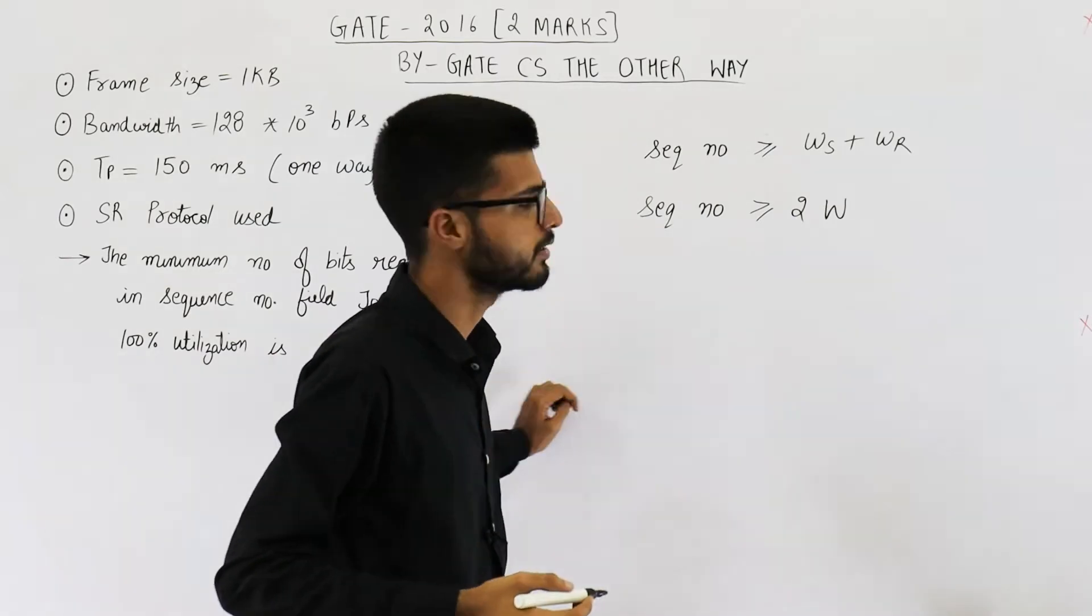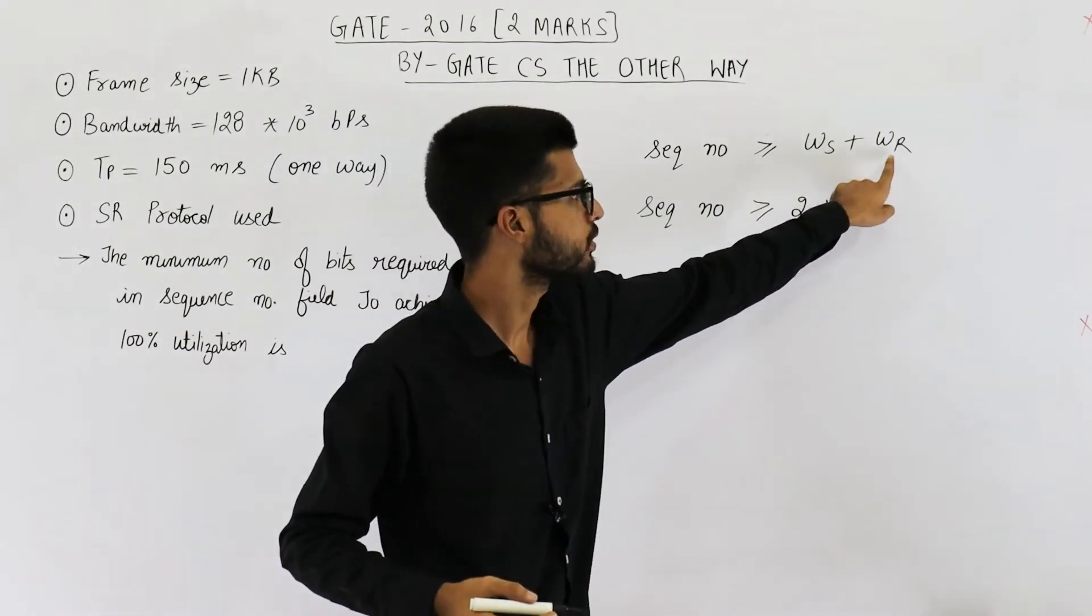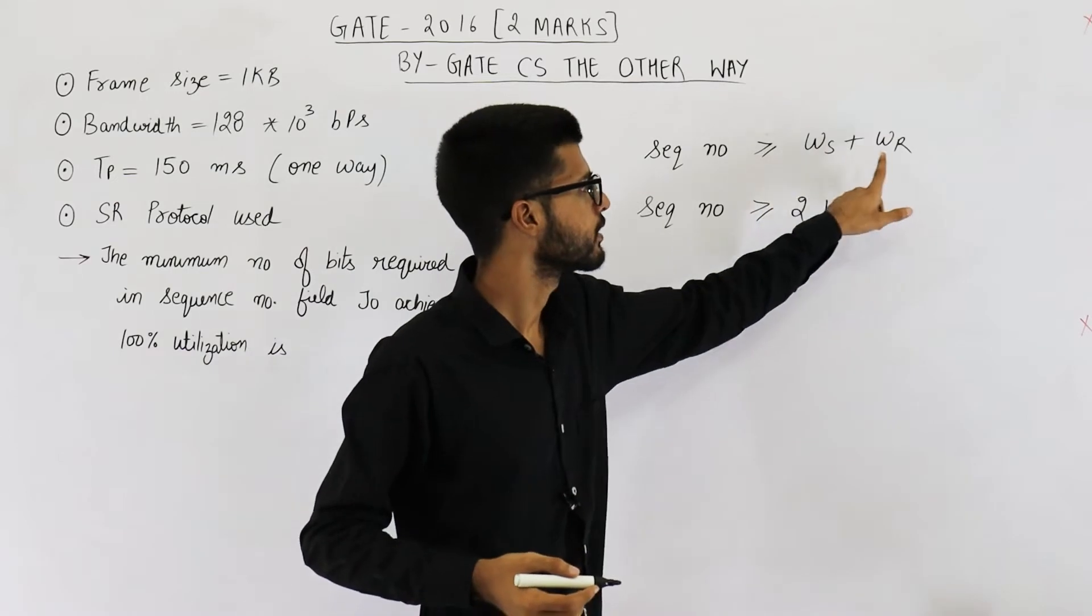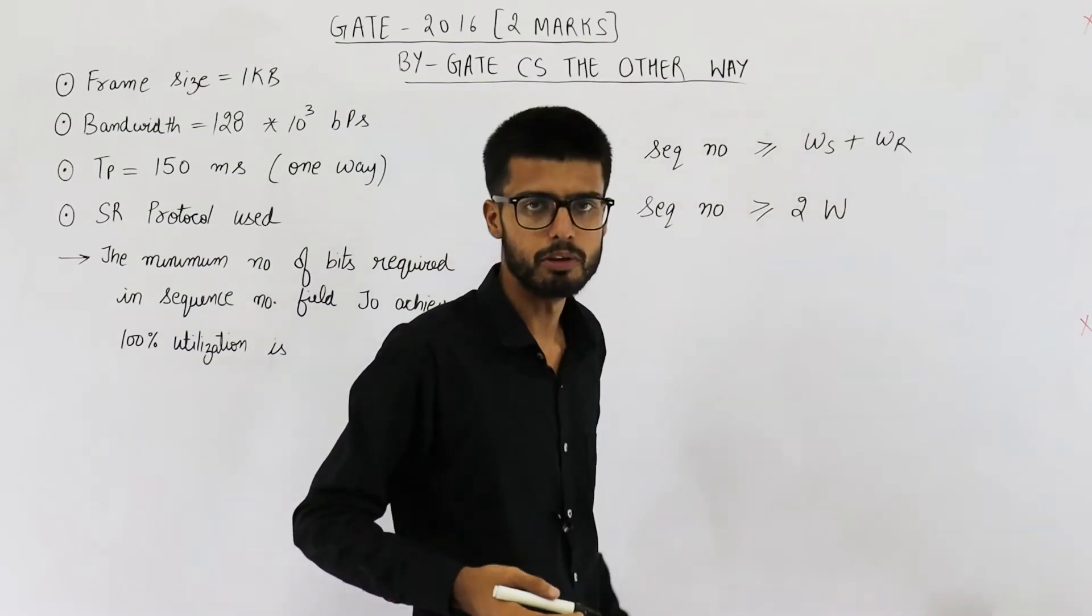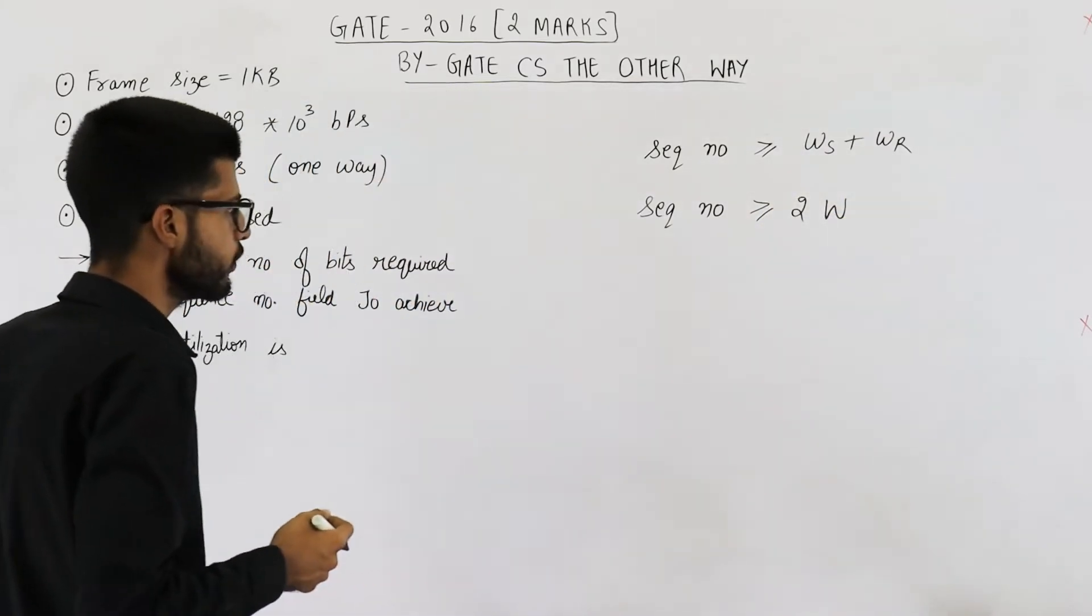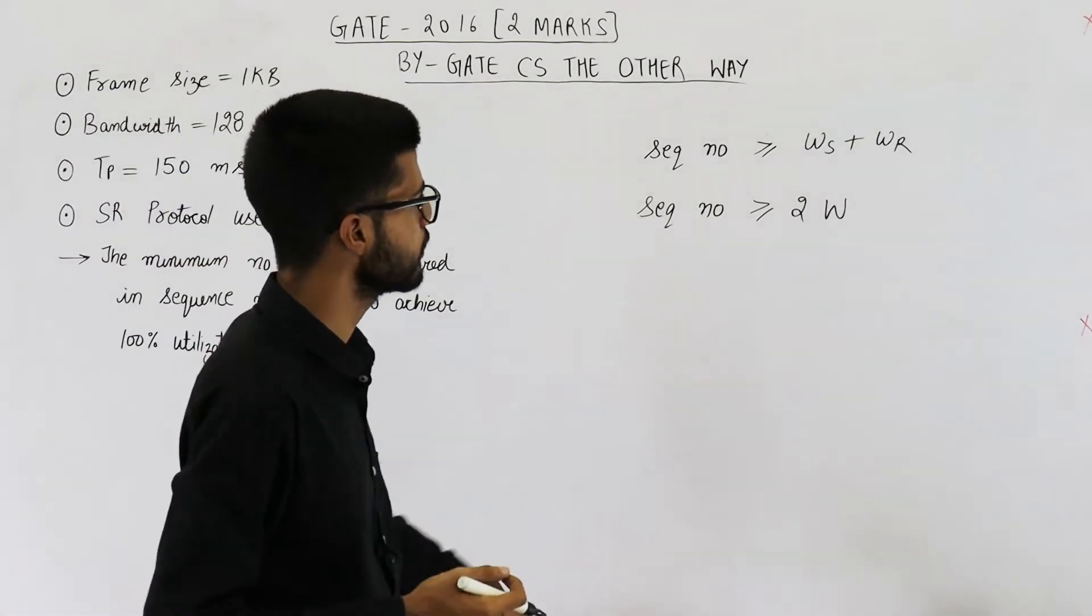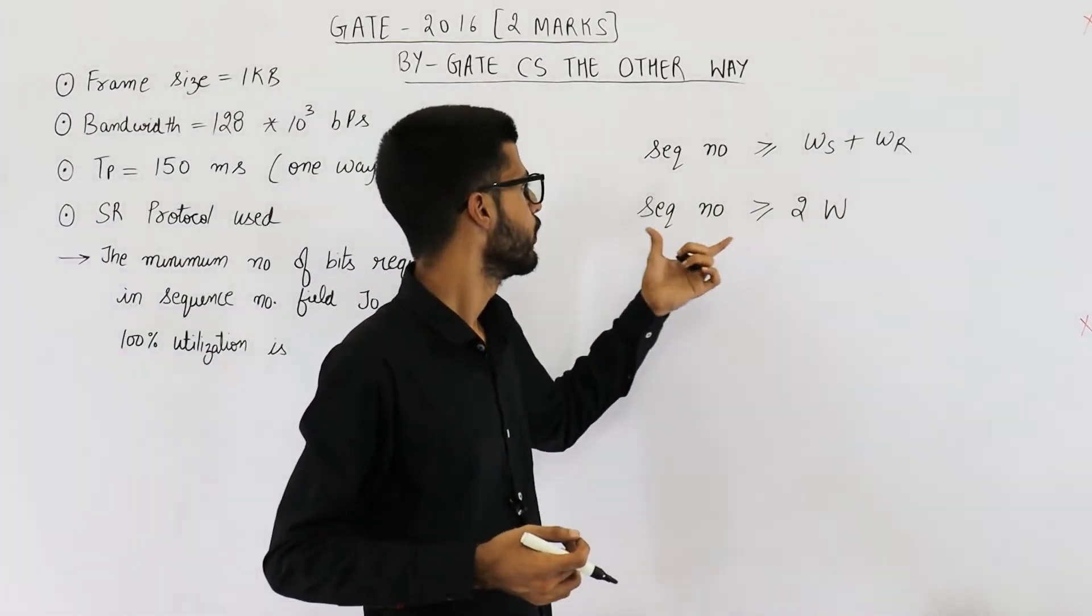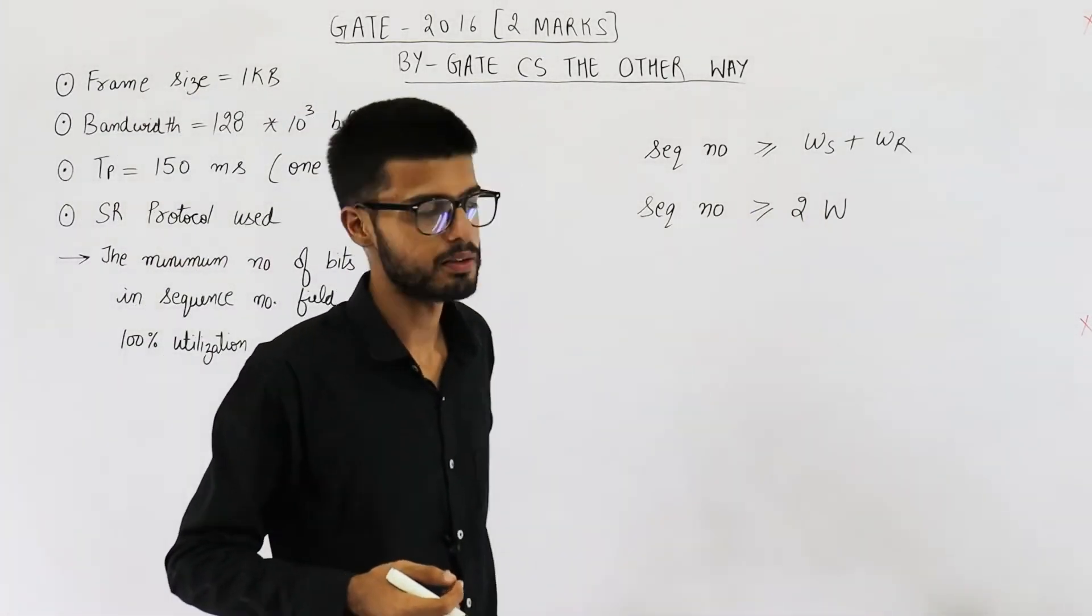That means minimum sequence numbers are 2 times W. Say the sender window size is W which is also equal to receiver window size. So WS equals WR equals W. Now we need to determine what is the value of this W for finding out minimum sequence numbers.